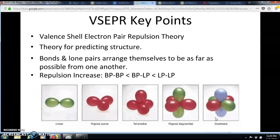Some key points you probably got from the video: VSEPR stands for Valence Shell Electron Pair Repulsion theory. The valence shell electron pairs are the lone pairs and bond pairs in a molecule. This theory is useful for predicting molecular structure — the bonds and lone pairs arrange themselves to be as far apart from each other as possible.